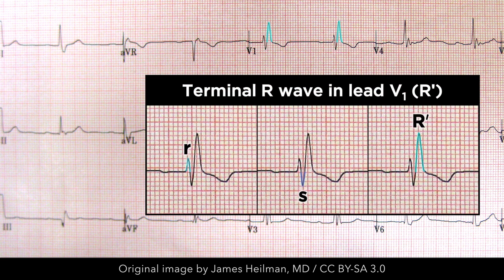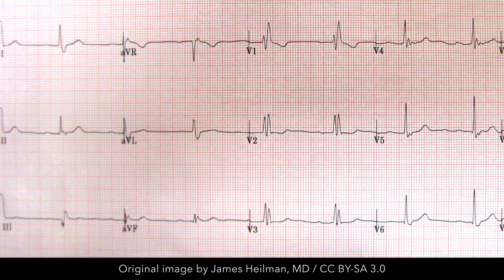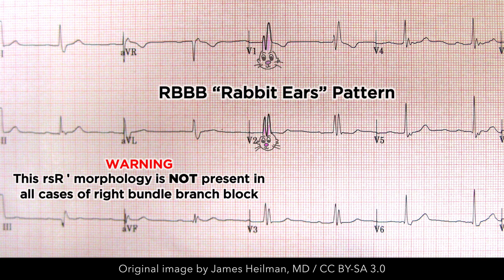The QRS complexes in right-sided leads have a large terminal R-wave, R-prime. The initial portion of the QRS complex depends on the orientation of the heart and the intricacies of the conduction block, but typically involves a combination of R and S-waves. The most characteristic wave morphology is RSR-prime, as seen in this image. This morphology is commonly likened to a pair of rabbit ears. With an RSR-prime wave, a small R-wave is followed by a small S-wave before terminating with a large R-wave, R-prime.